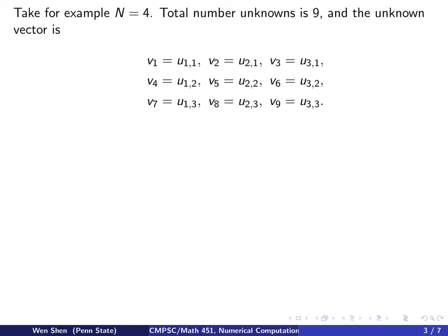Let's take an example with a small number. Let's say N equals 4. Then my total number of unknowns will be 3 times 3, which is 9. And the unknown vector shall be formed like this.